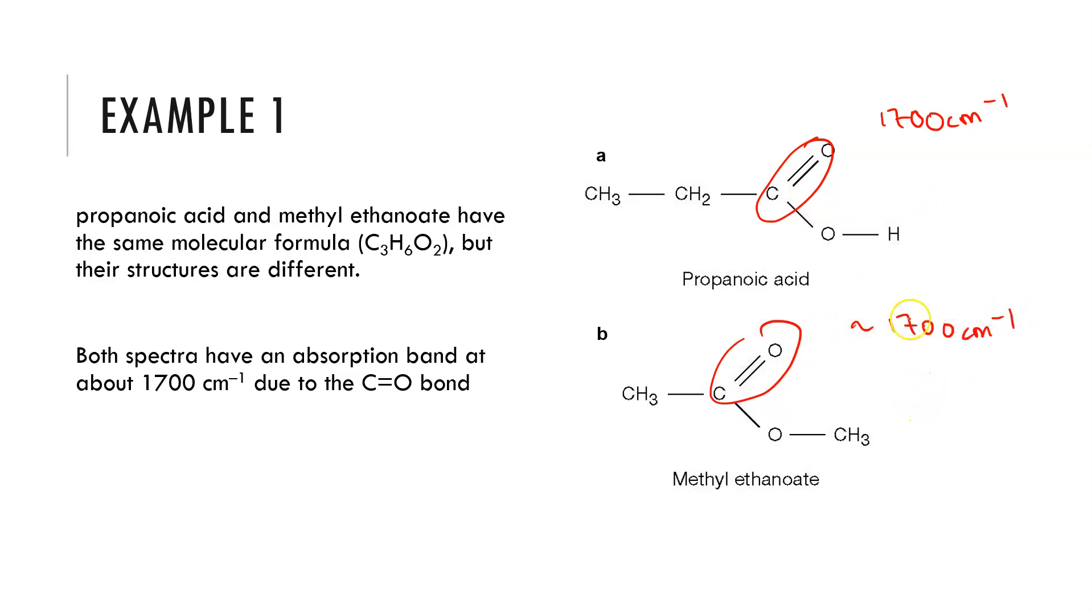However, we will see an OH stretch for the acid that would not be present in the ester. So sometimes when we're looking for characteristic stretches we're looking for the absence of them rather than the presence of them. For propanoic acid we would expect above 3000 wave numbers to see an OH acid stretch. This would not be present in the methyl ethanoate spectrum.